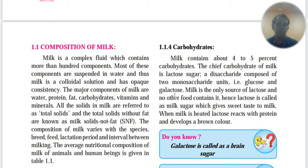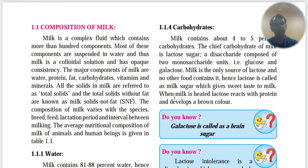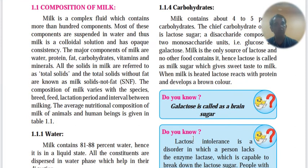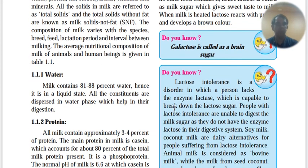When milk is heated, lactose reacts with protein, producing a brown color. Galactose is the brain sugar — very important for brain development. Some people are lactose intolerant because they lack the enzyme to digest lactose. The enzyme is lactase, which breaks down lactose.